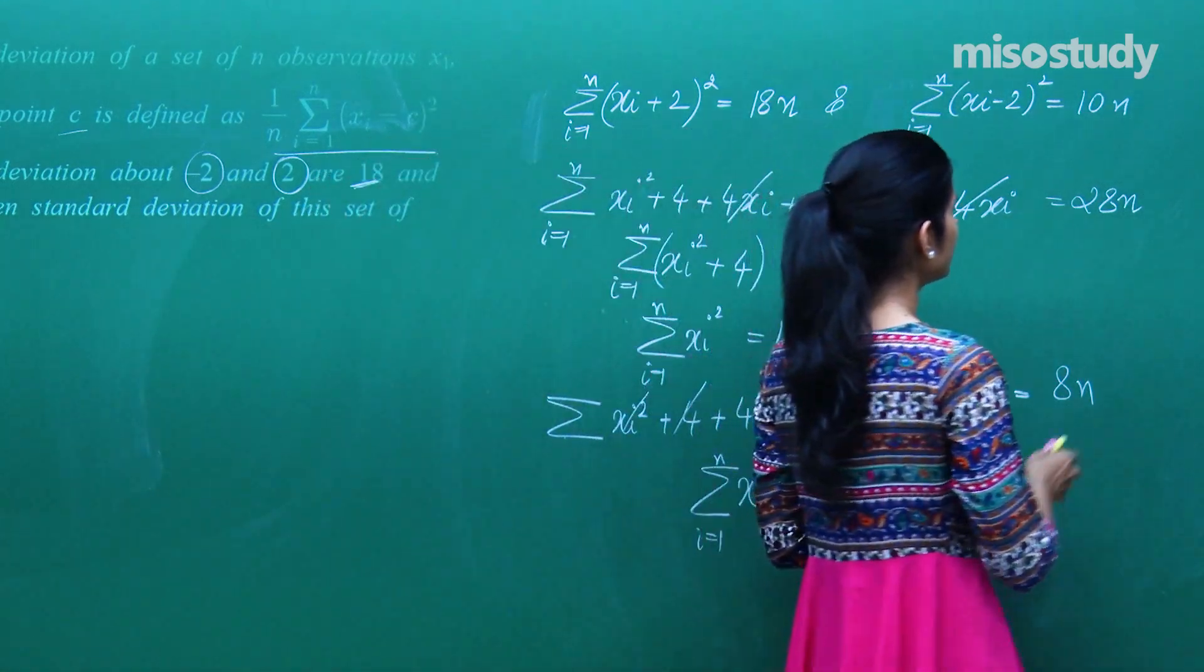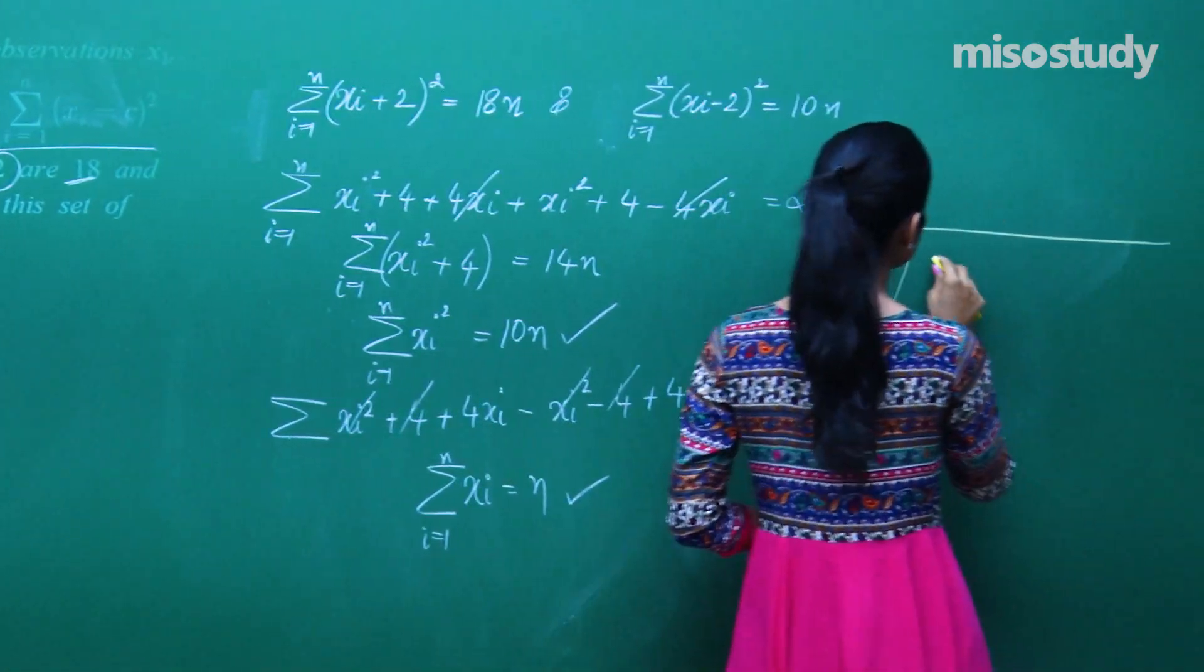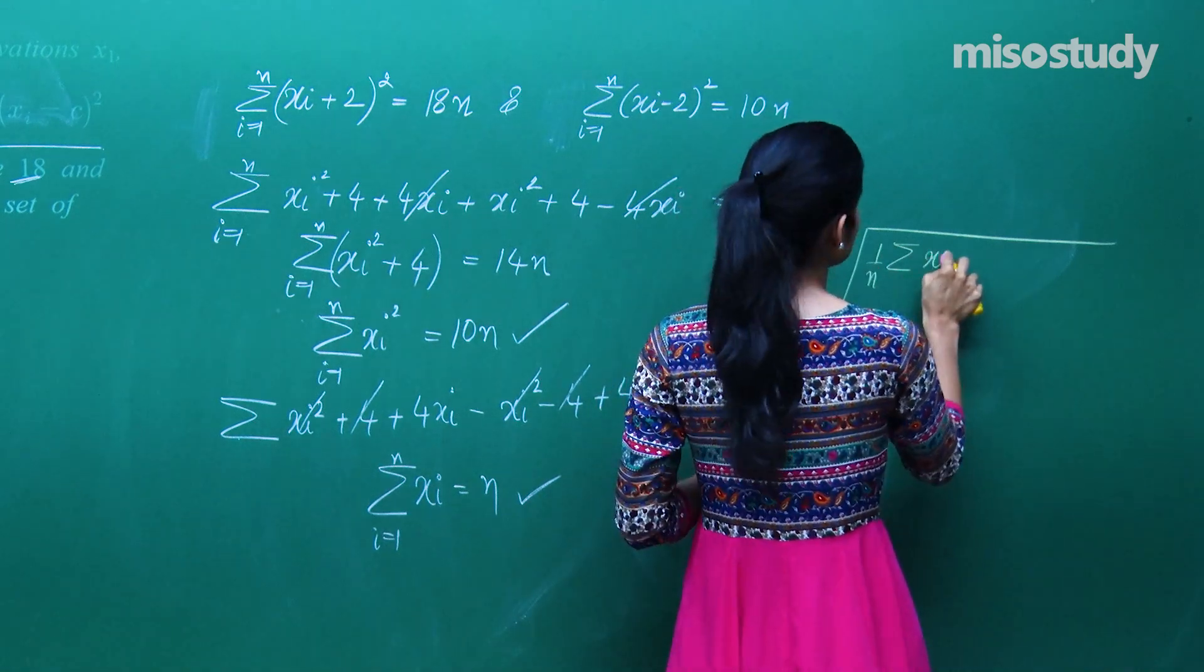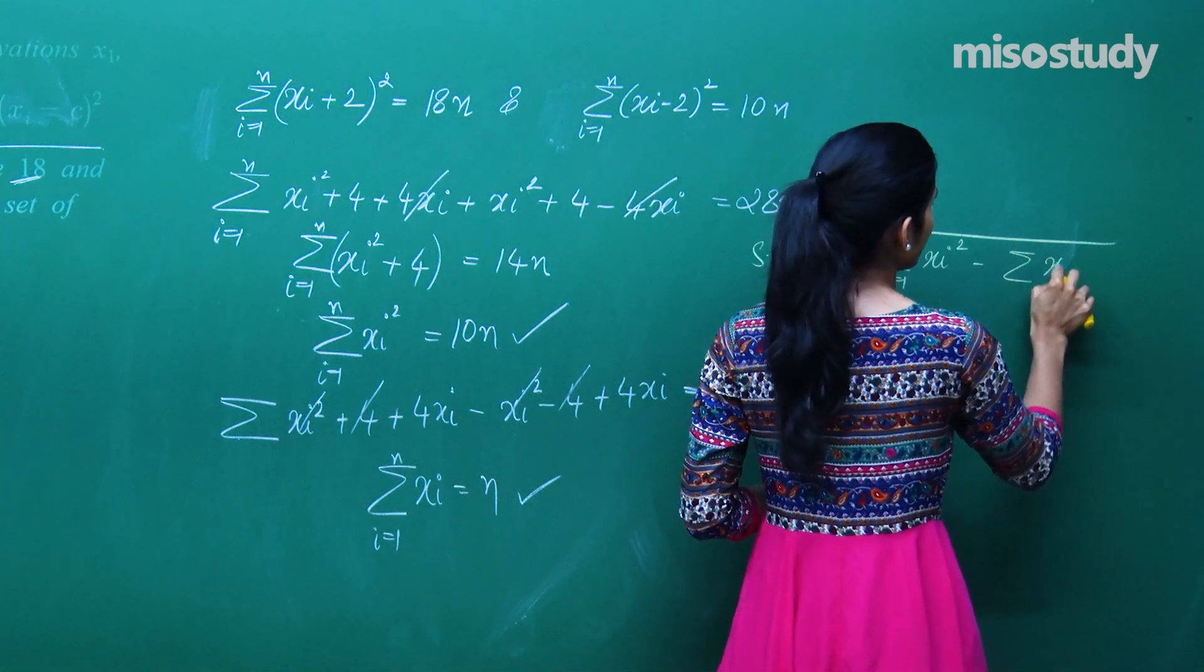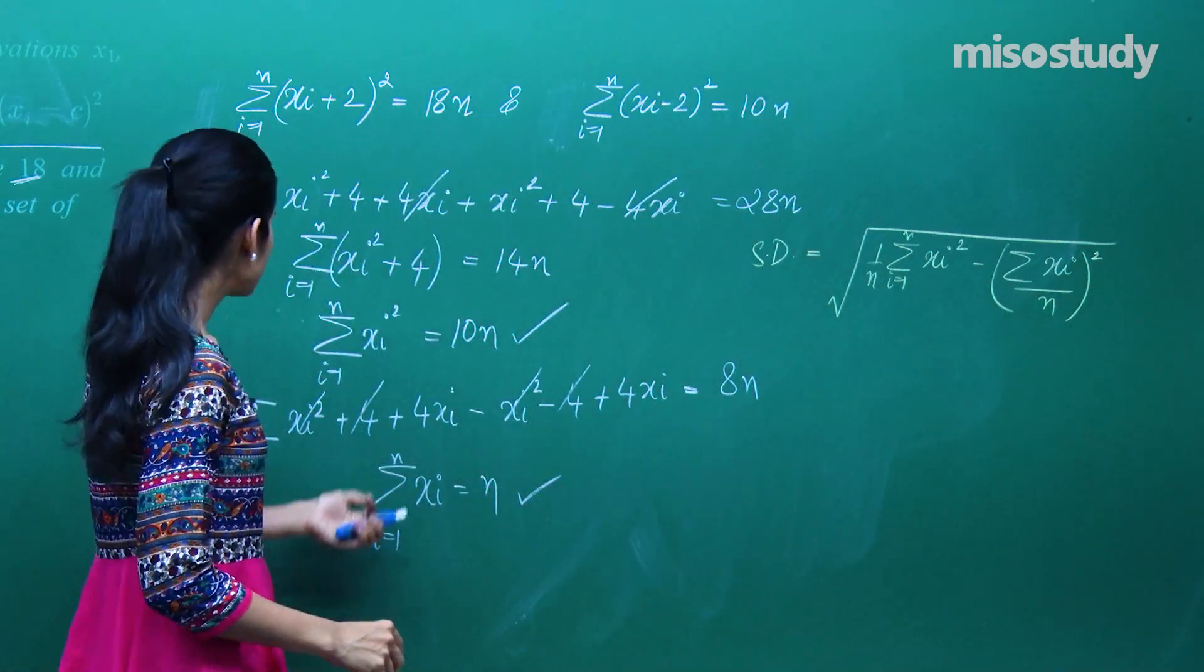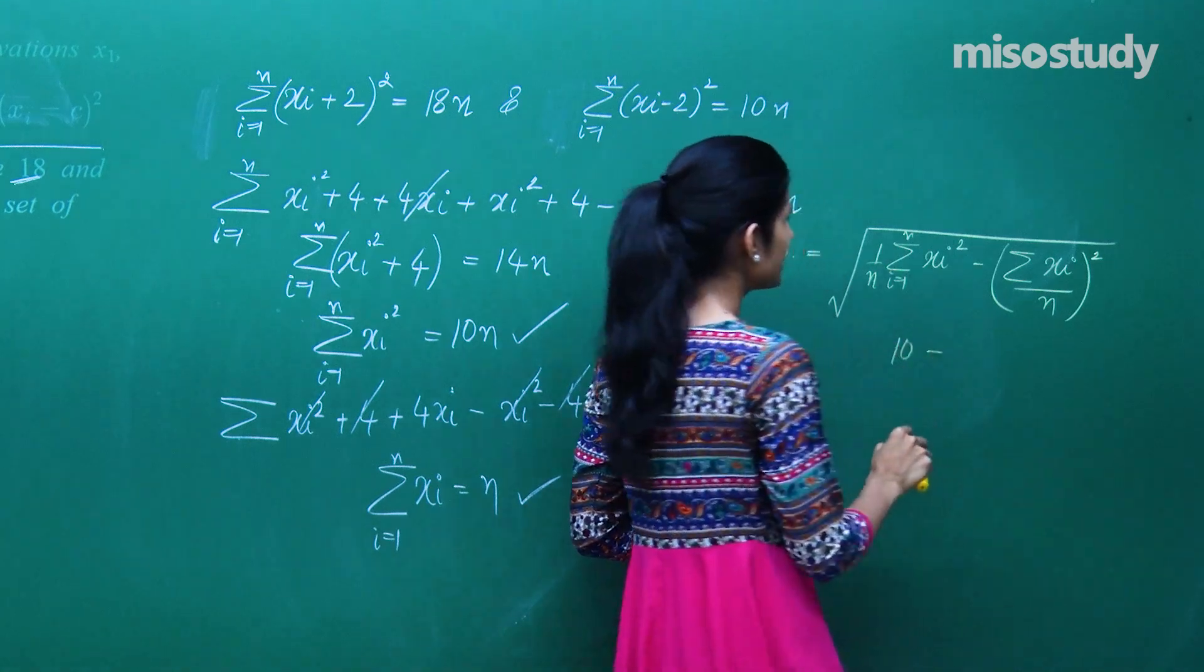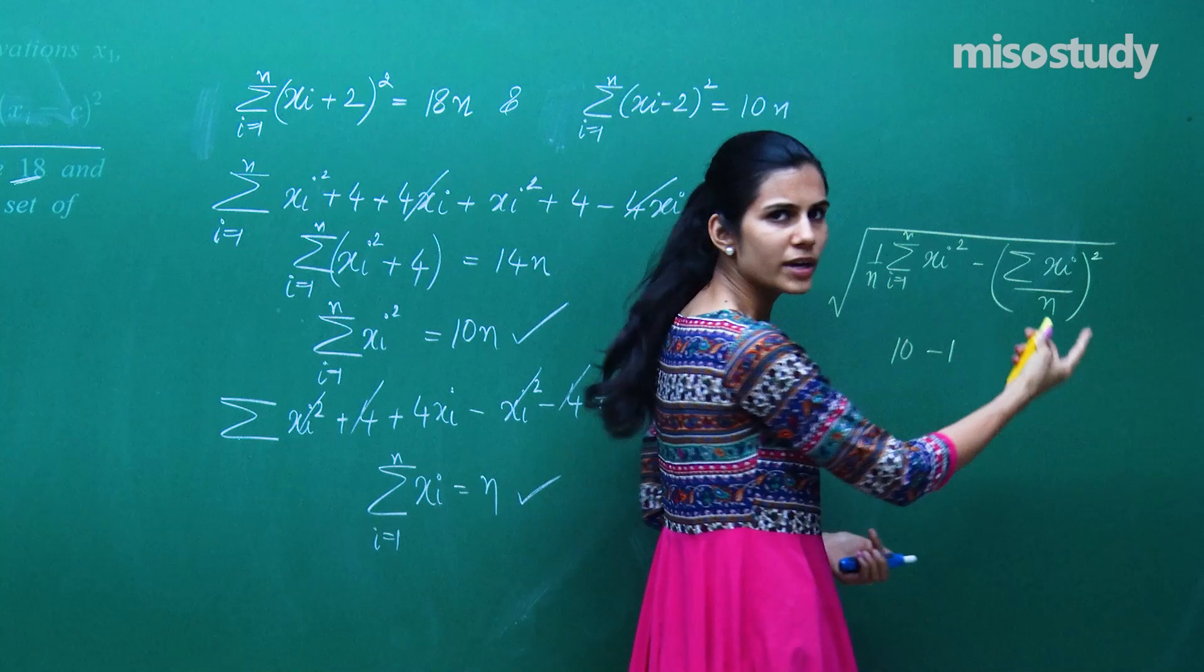Thik, ab standard deviation kya hota hai? Standard deviation is positive square root of the variance. Variance is 1 by n summation xi square i going from 1 to n minus summation xi by n ka whole square. What is summation xi square? It is 10n. So this is 10n upon n which is 10. And summation xi is n. n upon n is 1. 1 square is obviously 1.